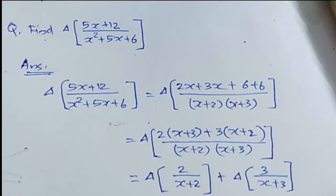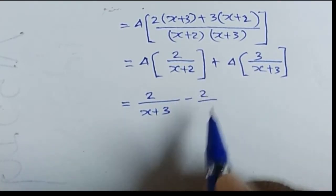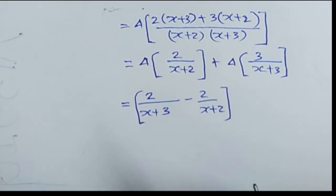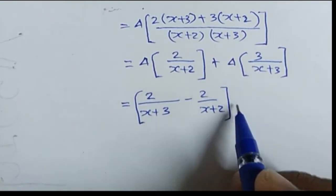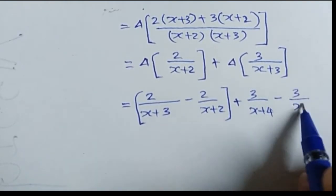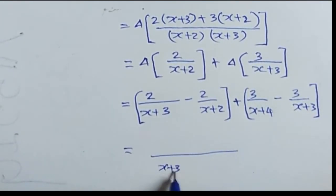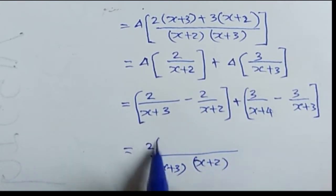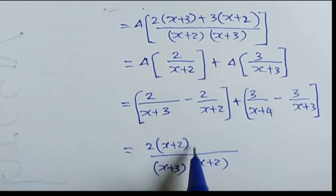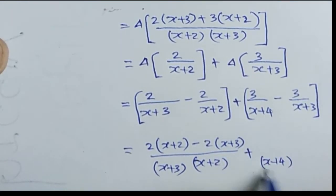Now let's find the forward difference of these two functions separately and add them together. Taking the interval of differencing as 1, the forward difference of 2/(x + 2) equals 2/(x + 3) minus 2/(x + 2), and the forward difference of 3/(x + 3) equals 3/(x + 4) minus 3/(x + 3). Taking the common denominators (x + 3)(x + 2) and (x + 4)(x + 3) respectively.